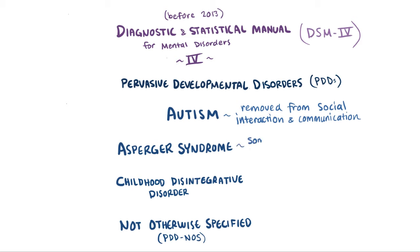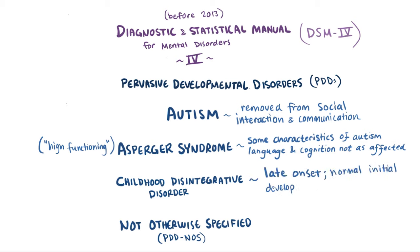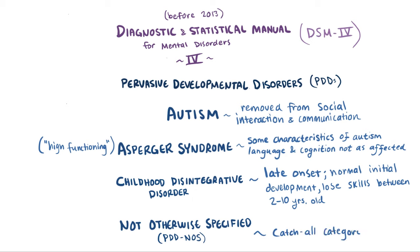Asperger's syndrome was used for children that appeared to have characteristics of autism, like difficulties with social interactions or nonverbal communication, but don't generally have significant delays in language or cognitive development, and therefore Asperger's syndrome was sometimes referred to as a high-functioning form of autism. Childhood disintegrative disorder was used to describe late onset of developmental delays — these children develop normally for their age, but then seem to lose acquired social and communication skills sometime between age 2 and 10. Pervasive developmental disorder not otherwise specified is essentially a catch-all category in which patients meet some, but not all, features of autism, Asperger's syndrome, or childhood disintegrative disorder.